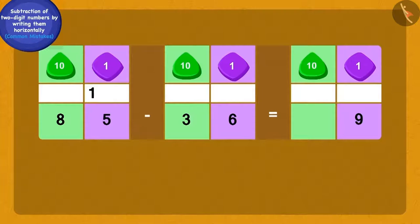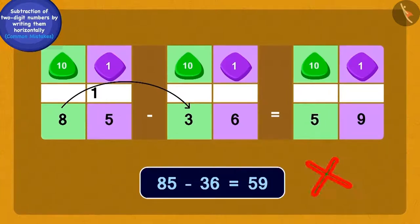But, after borrowing the one ten, they forgot to reduce the eight tens to seven tens. So, children, what will be the correct answer to this subtraction?